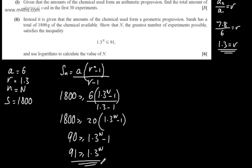I'm now going to solve this using logs, and I'm going to take logs of both sides of the inequality. I'm going to use base 10, and I'm just going to write now log of 91 will be equal to or greater than log of 1.3 to the N.